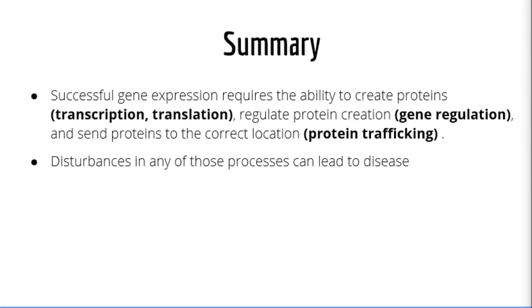So, in summary, successful gene expression requires the ability to create proteins, regulate protein expression, and send proteins to the correct location. Issues with any of these pathways can lead to diseases such as Rett syndrome, Duchenne muscular dystrophy, I-cell disease, and various others not named here. So, that's all. See you in the next lecture.